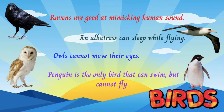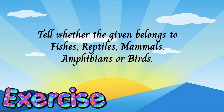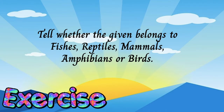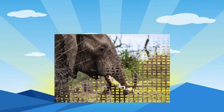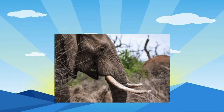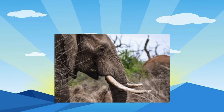That is all for the vertebrate animals. Now it's time for an exercise. Let's identify if the given animal belongs to fishes, reptiles, mammals, amphibians, or birds. First up, we have an elephant. The elephant is a mammal. Did you know that elephants sleep for only two to three hours per day?